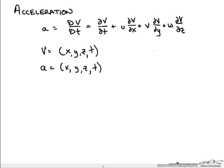Now we also know that this first term represents the local acceleration while the rest of these terms represent the convective acceleration, and that can be rewritten as the dot product of the velocity vector and the gradient operator of the velocity.